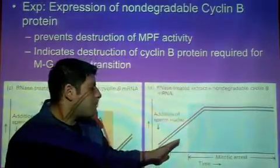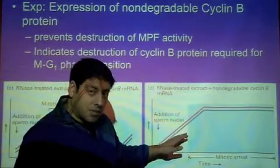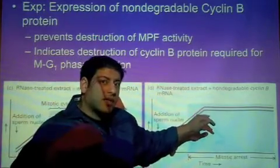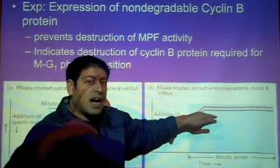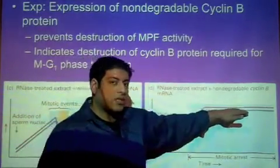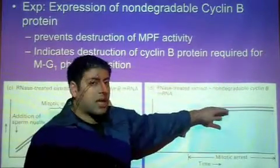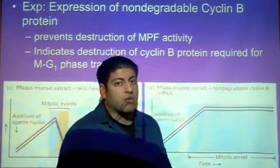In prophase, cyclin B and MPF activity are beginning to come together and be activated. But it's at metaphase that we have both high MPF activity and a high cyclin B concentration. And that's what remains. So a non-degradable form of cyclin B keeps both MPF and cyclin B activity high.